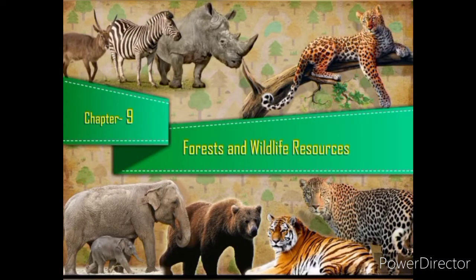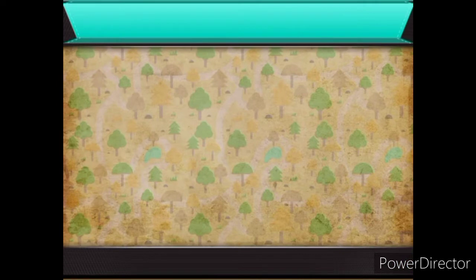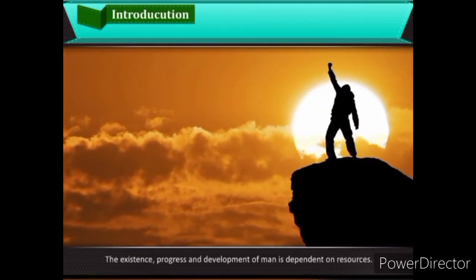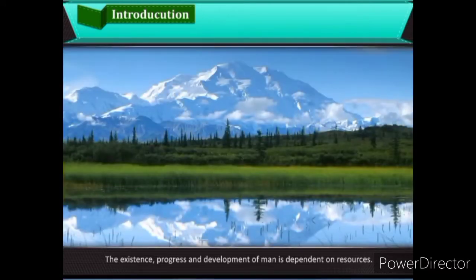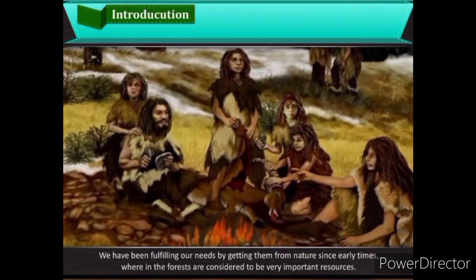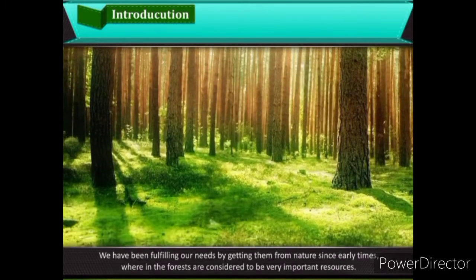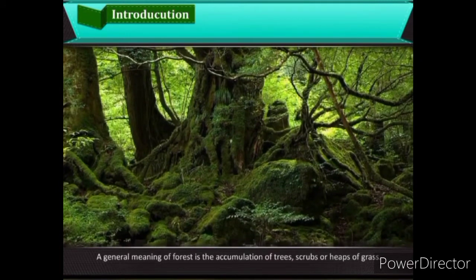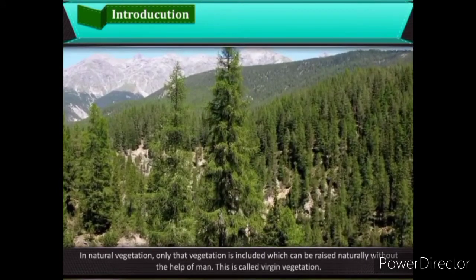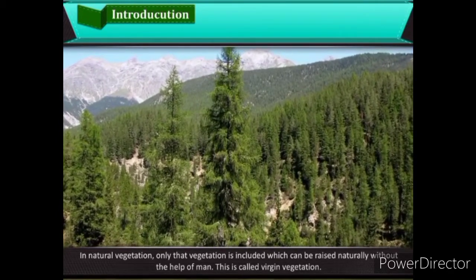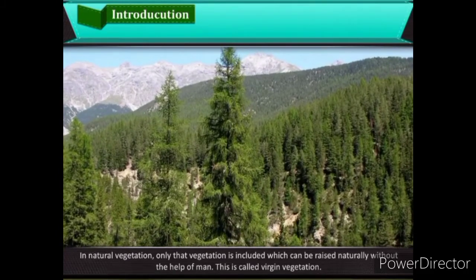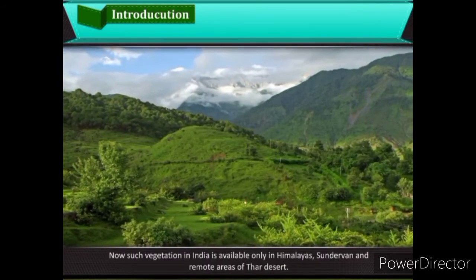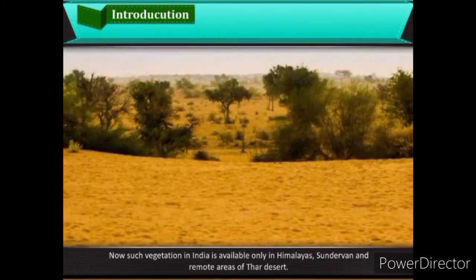Chapter 9: Forests and Wildlife Resources. Introduction — The existence, progress and development of man is dependent on resources. We have been fulfilling our needs by getting them from nature since early times, wherein forests are considered to be very important resources. A general meaning of forest is the accumulation of trees, scrubs or heaps of grass. In natural vegetation, only that vegetation is included which can be raised naturally without the help of man. This is called virgin vegetation. Such vegetation in India is available only in Himalayas, Sundarbans, and remote areas of Thar Desert.